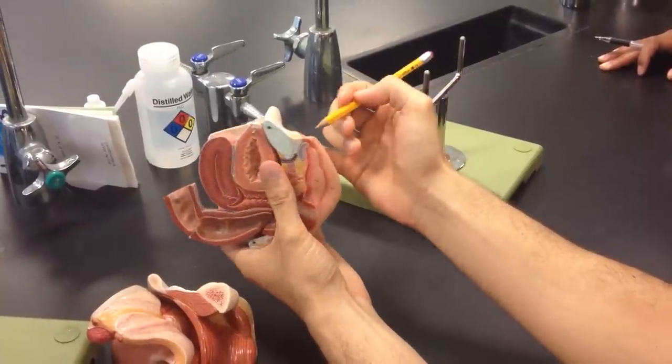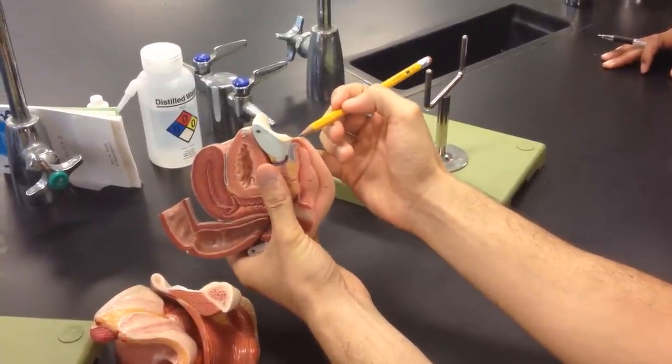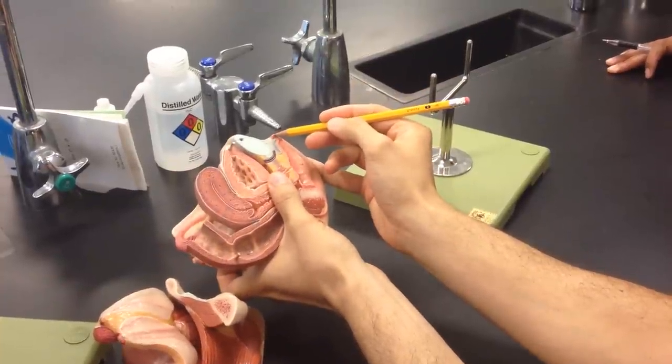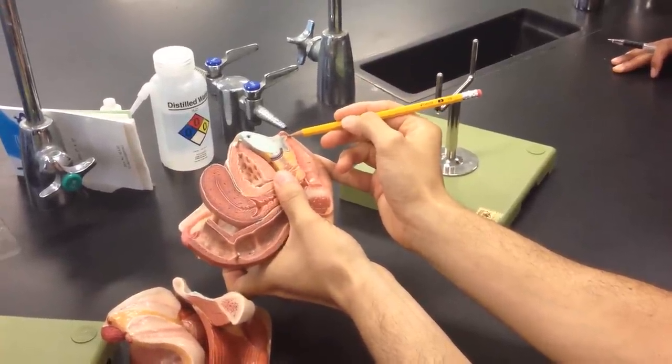The prepuce is actually going to be on top of the clitoris. So here, everybody see that clitoris right there? Alright. So it's going to be the clitoris.